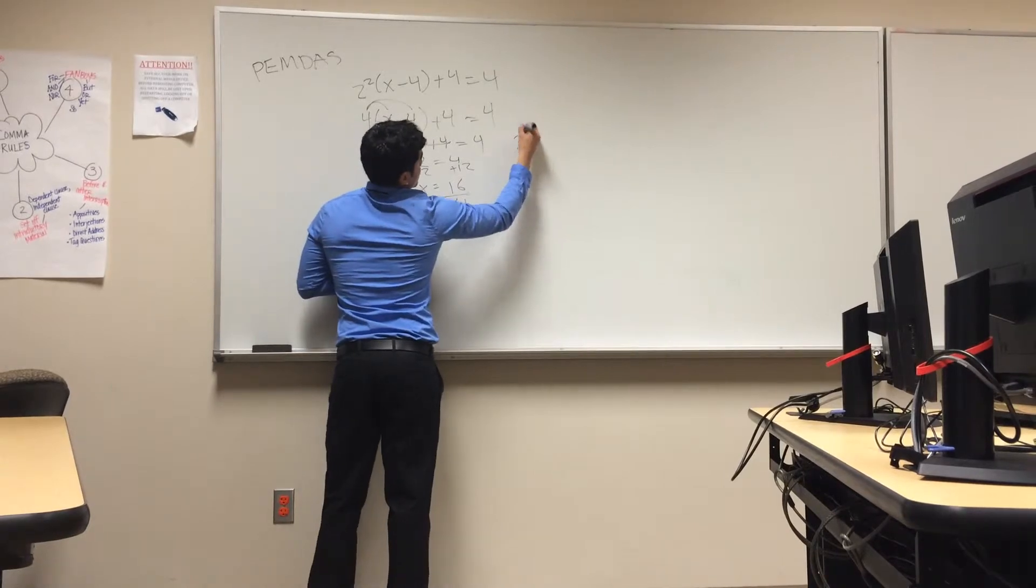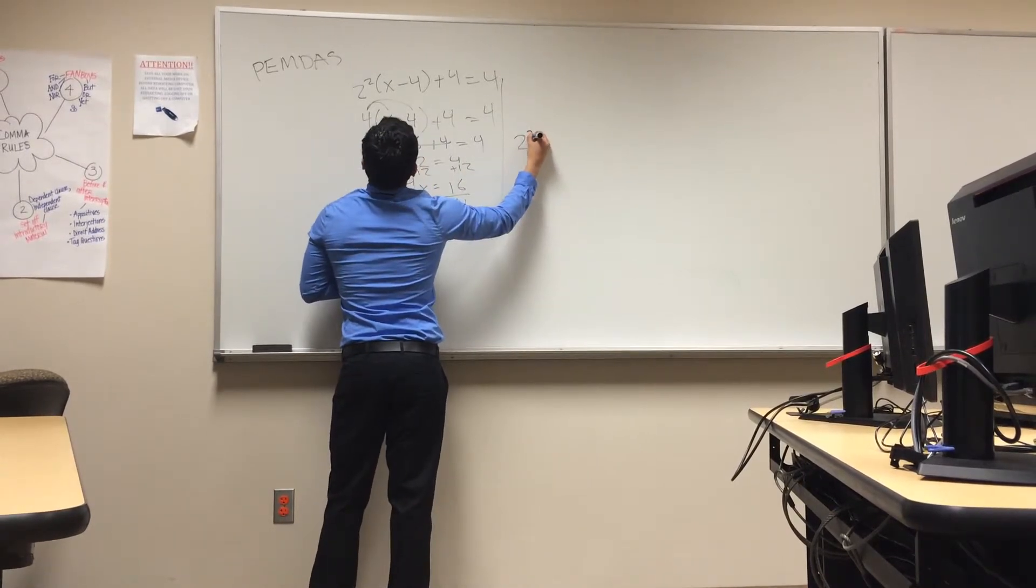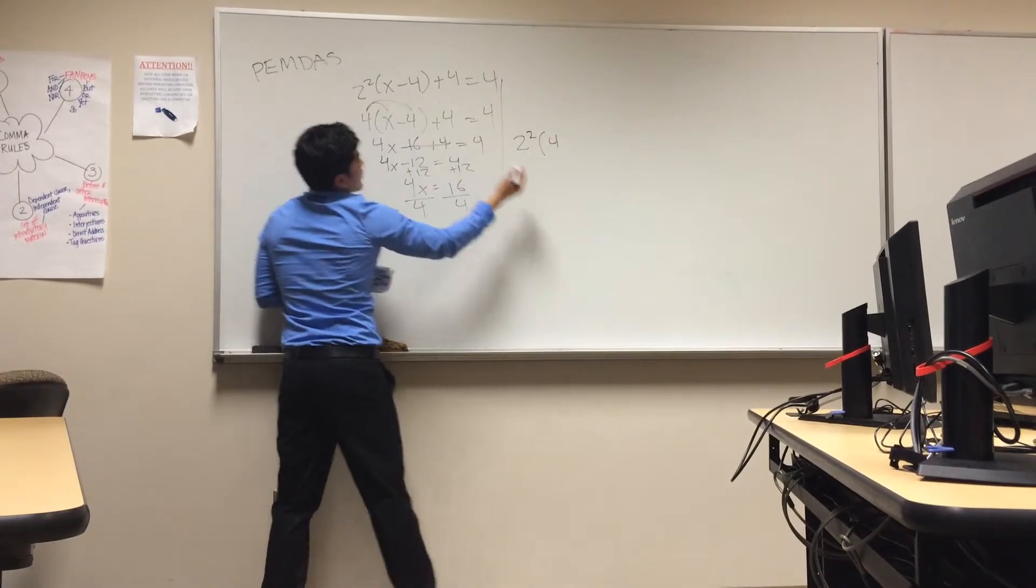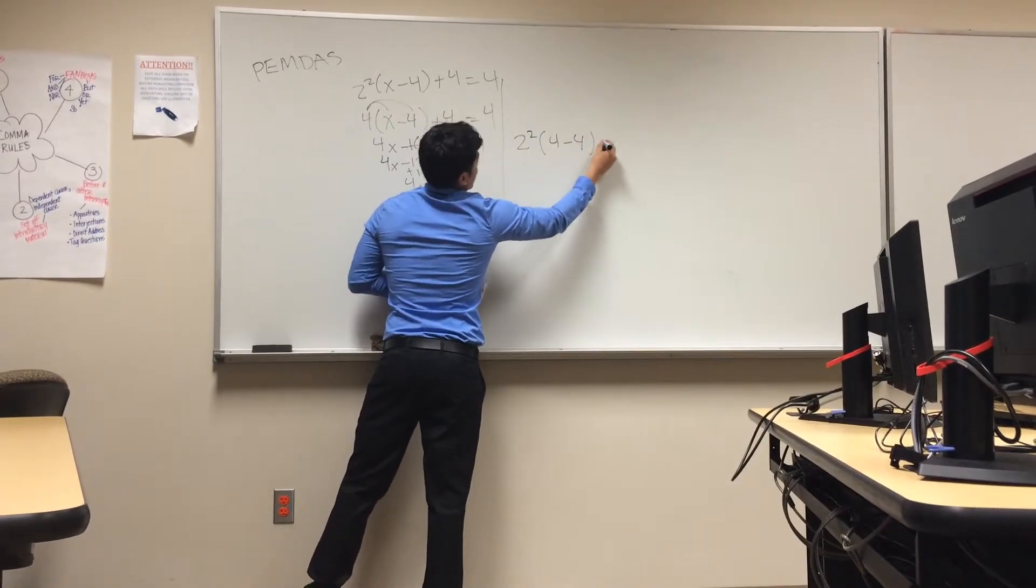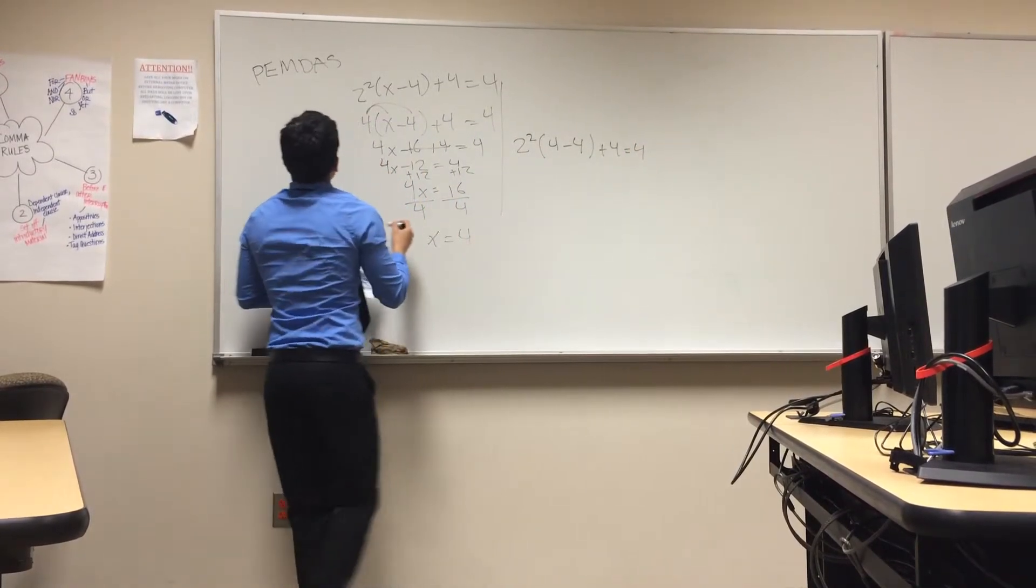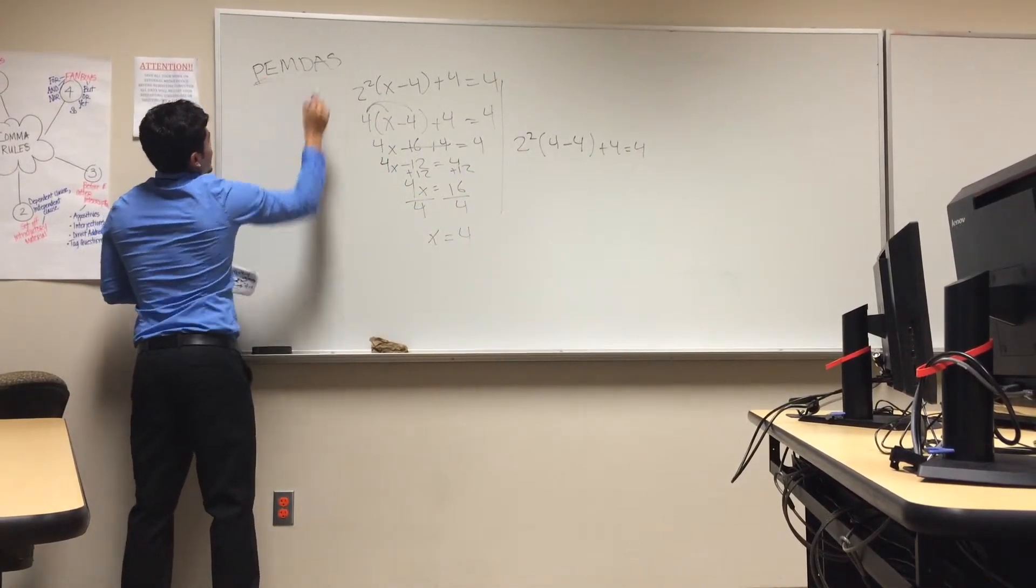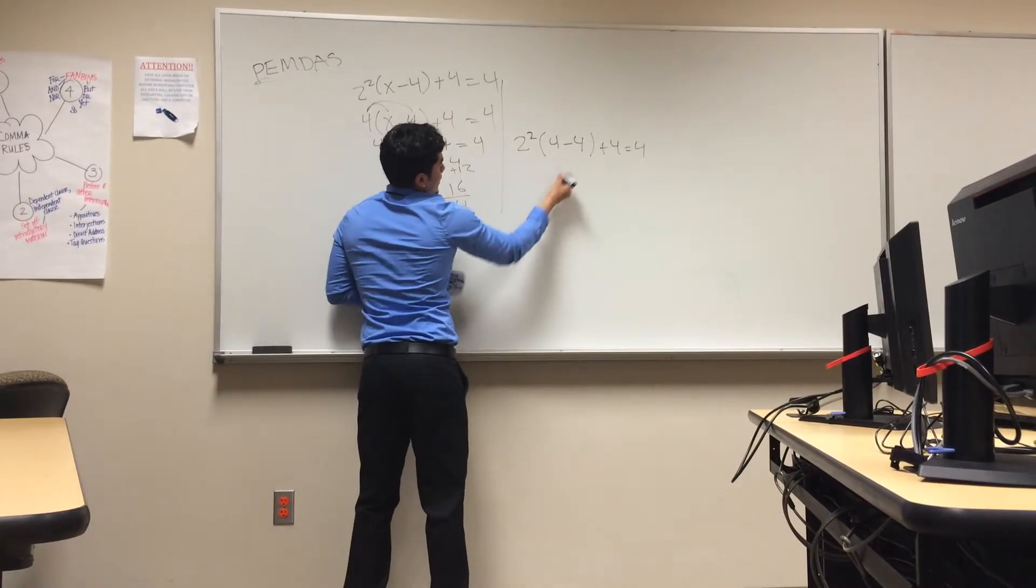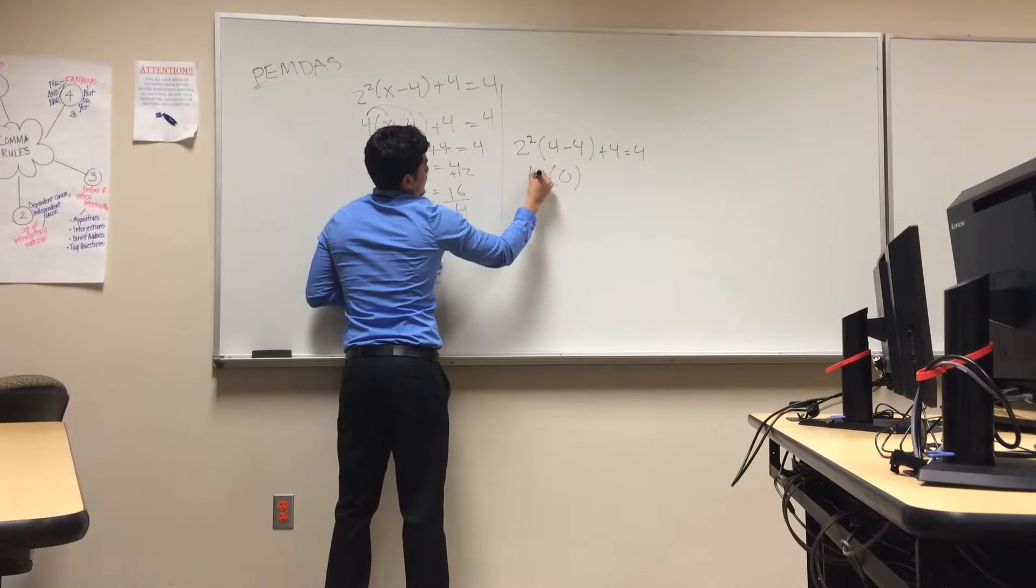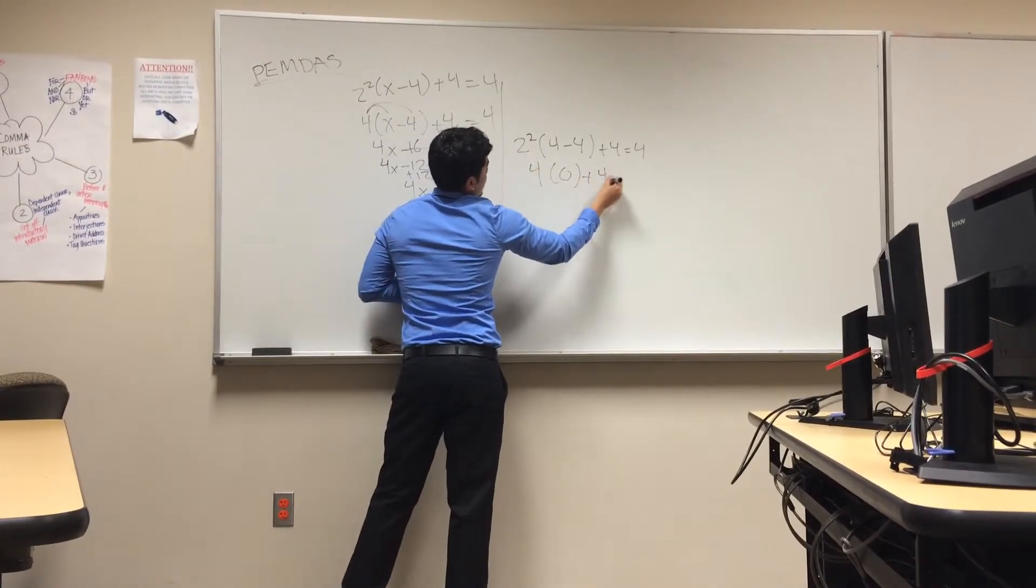x is 4. So, you plug in 4 for x minus 4 plus 4 equals 4. You do parentheses first. You got to remember PEMDAS. So, 4 minus 4 would equal 0. 2 squared is 4.